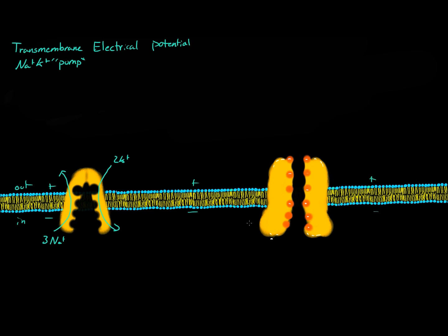But this is only a few millivolts. A cell at rest has a voltage, or an electrical potential across it, of about negative 60 millivolts. So if this pump is only creating a few millivolts, where does this negative 60 millivolts come from? Additional voltage difference actually occurs because the pump creates two different types of concentration gradients.